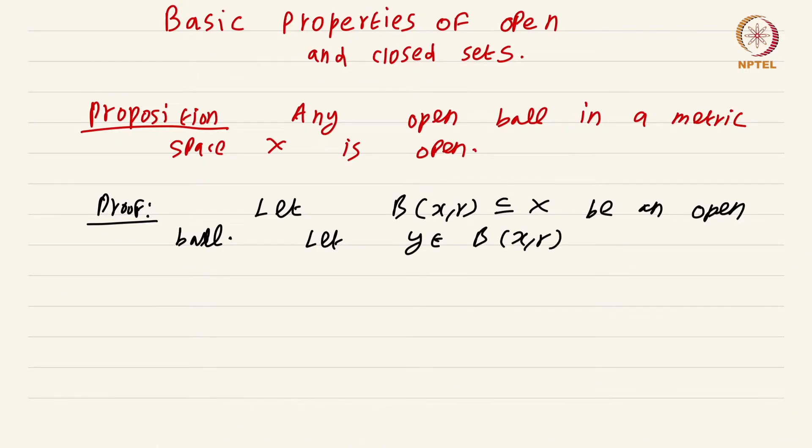Now we have to show that this point y is an interior point of B(x,r). So what we do is choose r_1 by definition to be nothing but r minus d(x,y), exactly what we did for the real numbers.